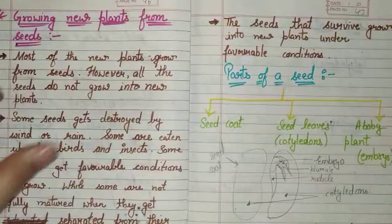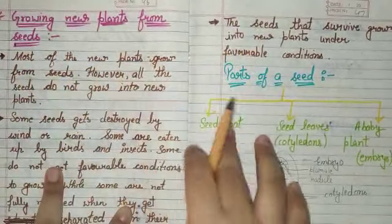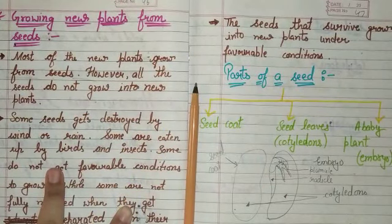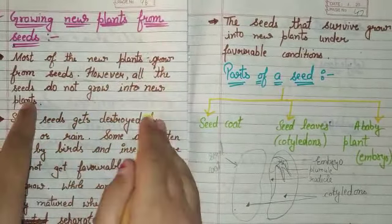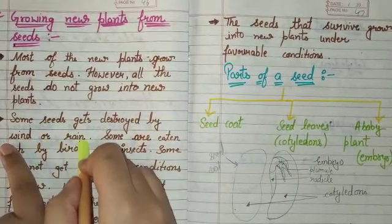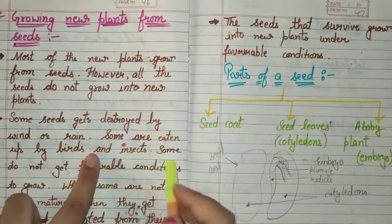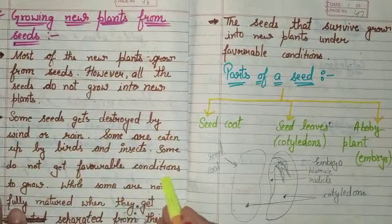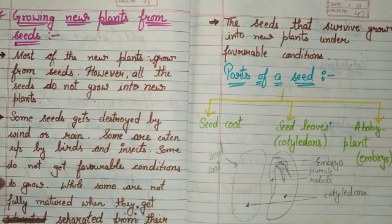Next is growing new plants from seed. Most new plants grow from seeds. However, all seeds do not grow into new plants. Some seeds get destroyed by wind or rain. Some are eaten by birds and insects. Some do not get favorable conditions to grow, while some are not fully mature when they get separated from their parent plants.